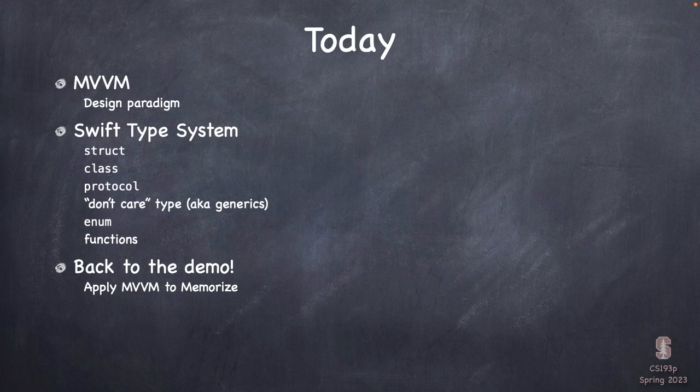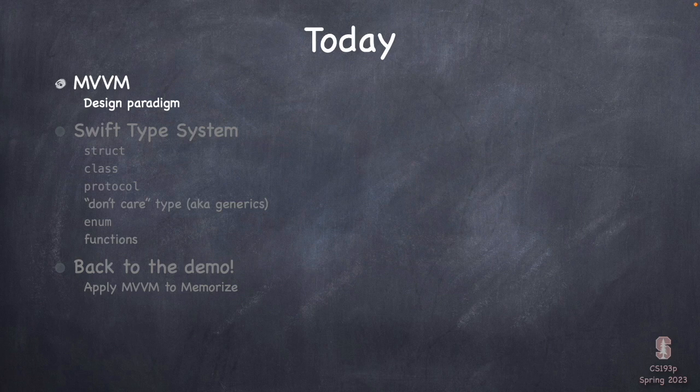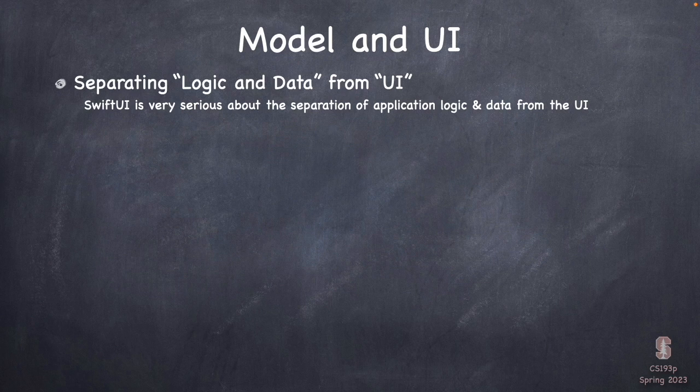Then we're going to dive back into the demo and start building the game logic for our Memorize app — what happens when you click on cards and all that. So, this MVVM thing — what's that? Well, in Swift, to say that it's important to separate the logic and data from the UI would be a dramatic understatement. It's really, really important.